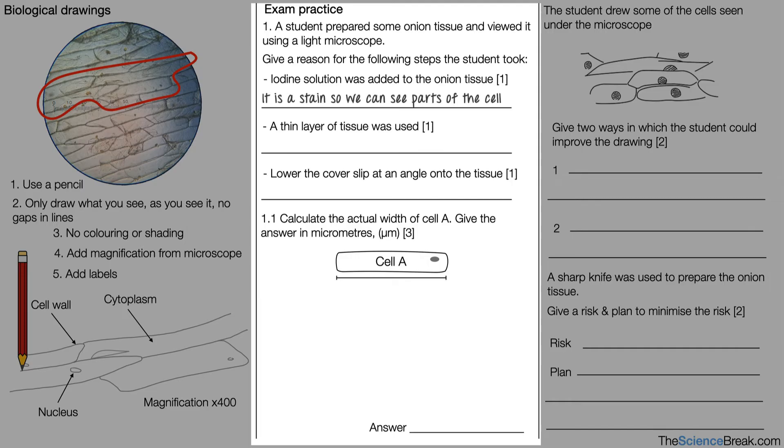Iodine solution was added to the onion tissue for one mark. Well, iodine solution is a stain and it's so we could see parts of the cell. That's what will get you the mark for that question. A thin layer of tissue was used. Well, this is to allow light to pass through to help us see the cells. That's what would get you the mark for that one. Lower the cover slip at an angle onto the tissue. Well, we do this to prevent air bubbles from being trapped. That's the mark for that question there.